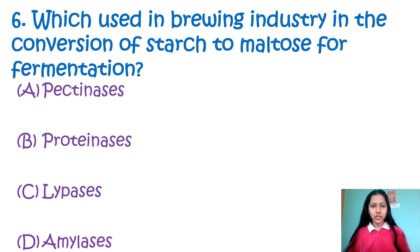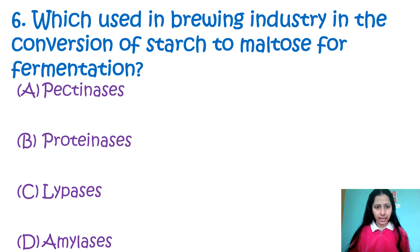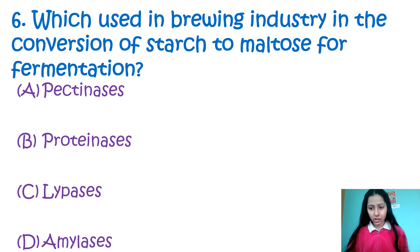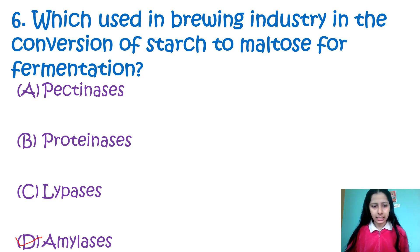Question number 6: Which enzyme is used in the brewing industry in the conversion of starch to maltose for fermentation? Option A: pectinase, Option B: protease, Option C: lipase, Option D: amylase. In the brewing industry, for starch to maltose conversion during fermentation, the amylase enzyme is used — more specifically, alpha amylase enzyme. So option number D is correct.